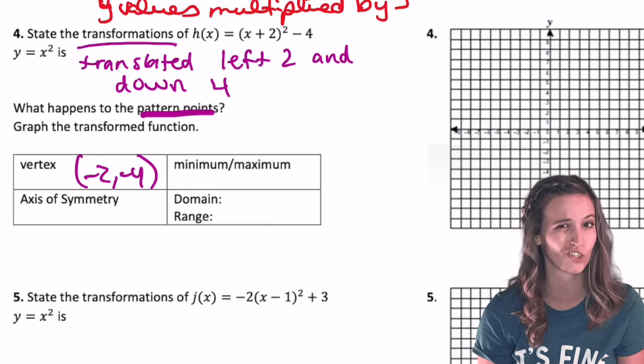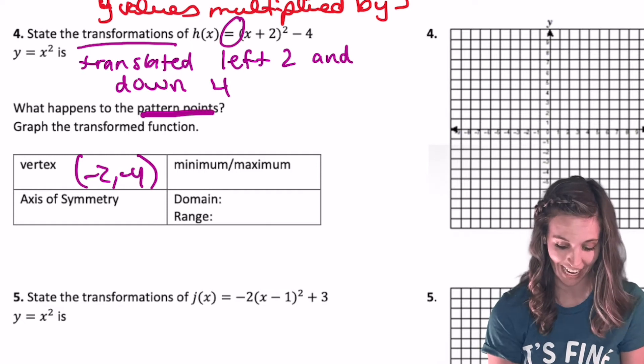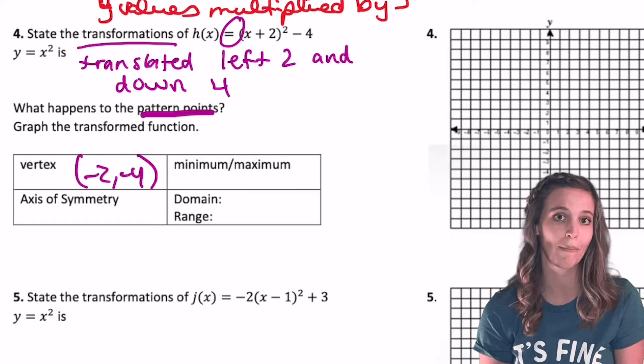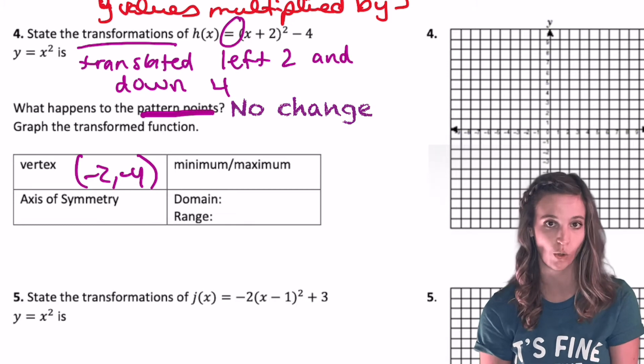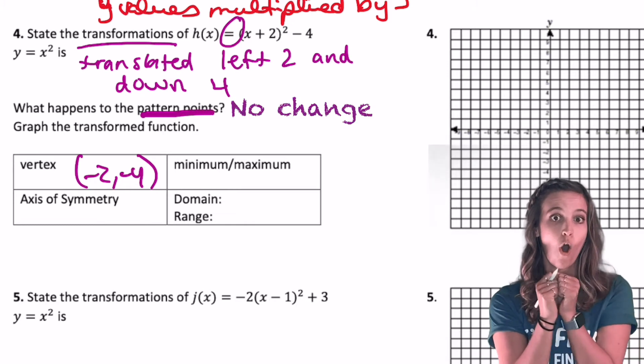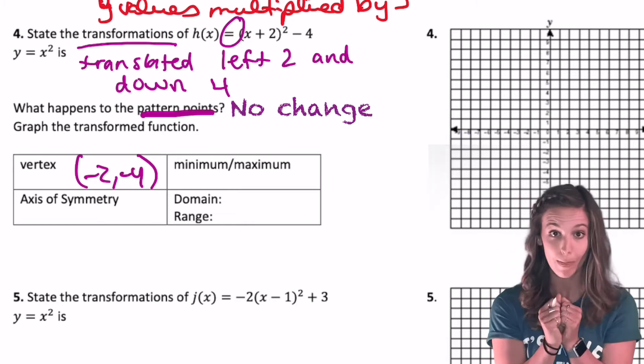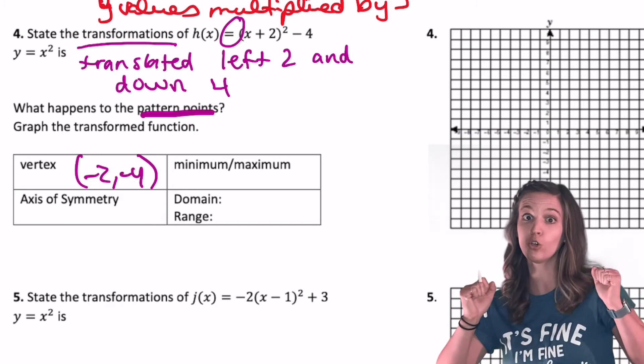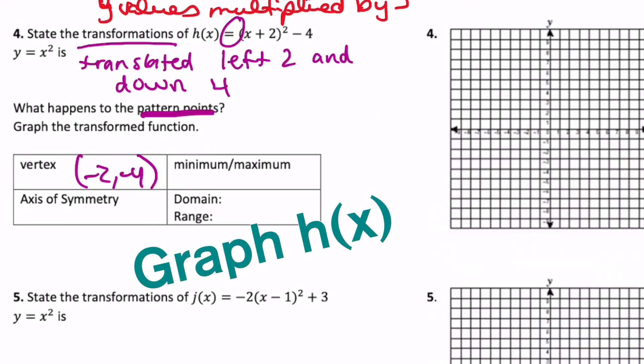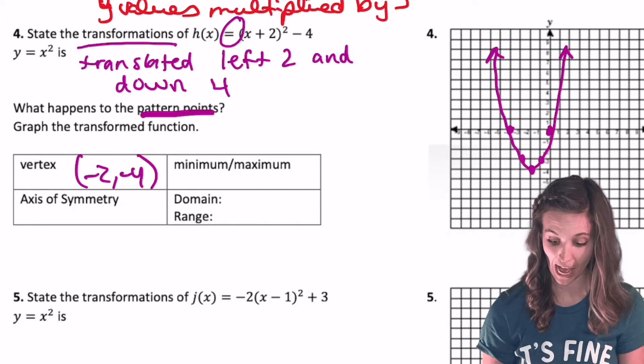Let's go graph that vertex and use our pattern points to graph this. Did my pattern points change at all? I don't have a dilation or a reflection, so my pattern points aren't going to change. So I'm going to start at my vertex and go over 1, up 1, back to my vertex, over 2, up 4.